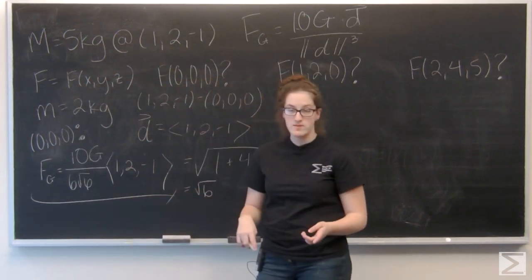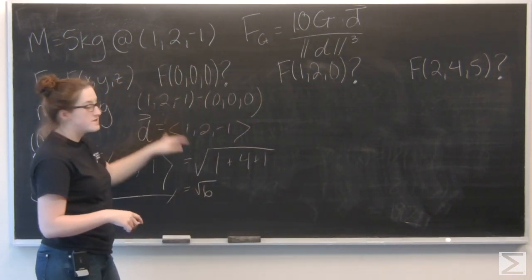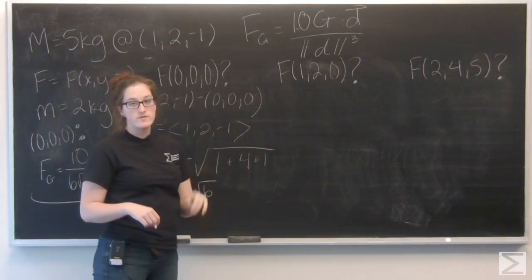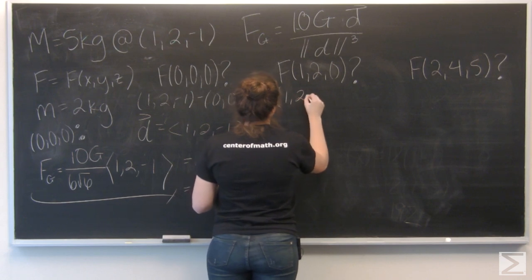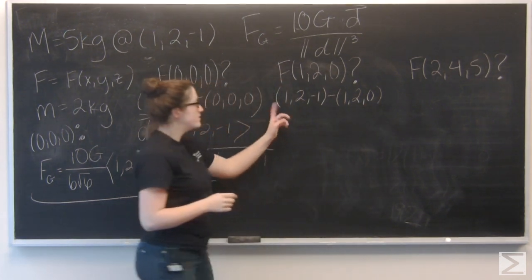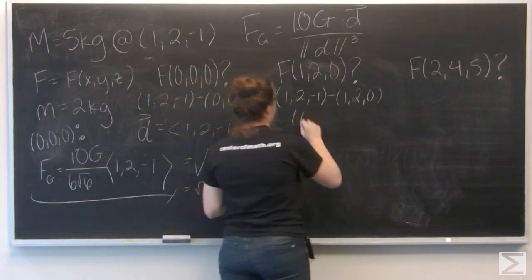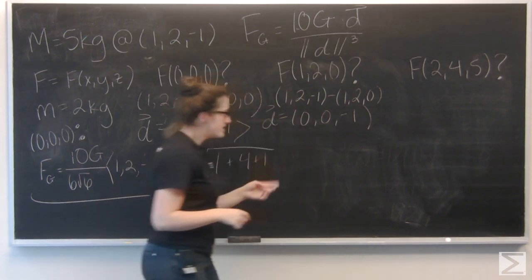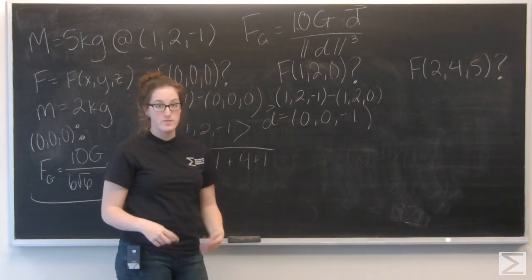Okay, so that's my first one. Now let's move on to (1, 2, 0). So here I have the same thing. First I want to subtract the location of big M from this location. So (1, 2, -1) minus (1, 2, 0). So the first two terms are going to cancel each other out, and I'm left with the vector (0, 0, -1). Well that's going to be pretty easy to find the magnitude of. I only have one component and it's one meter. So the magnitude of D is going to be 1.